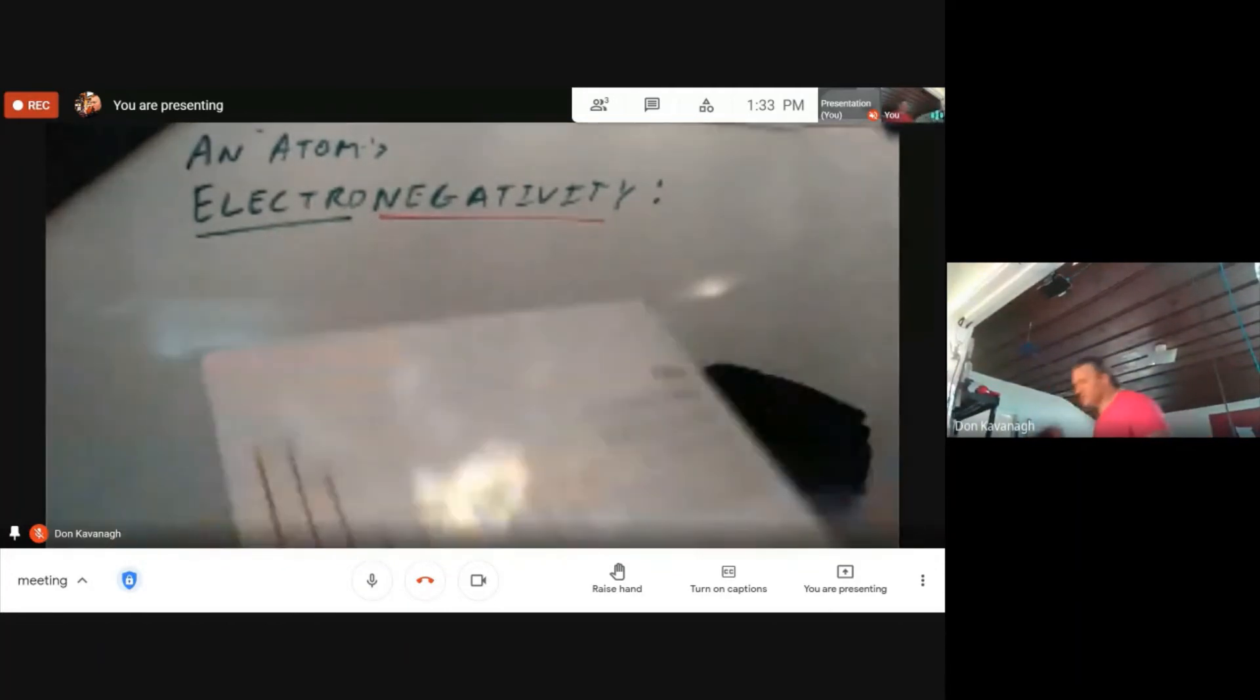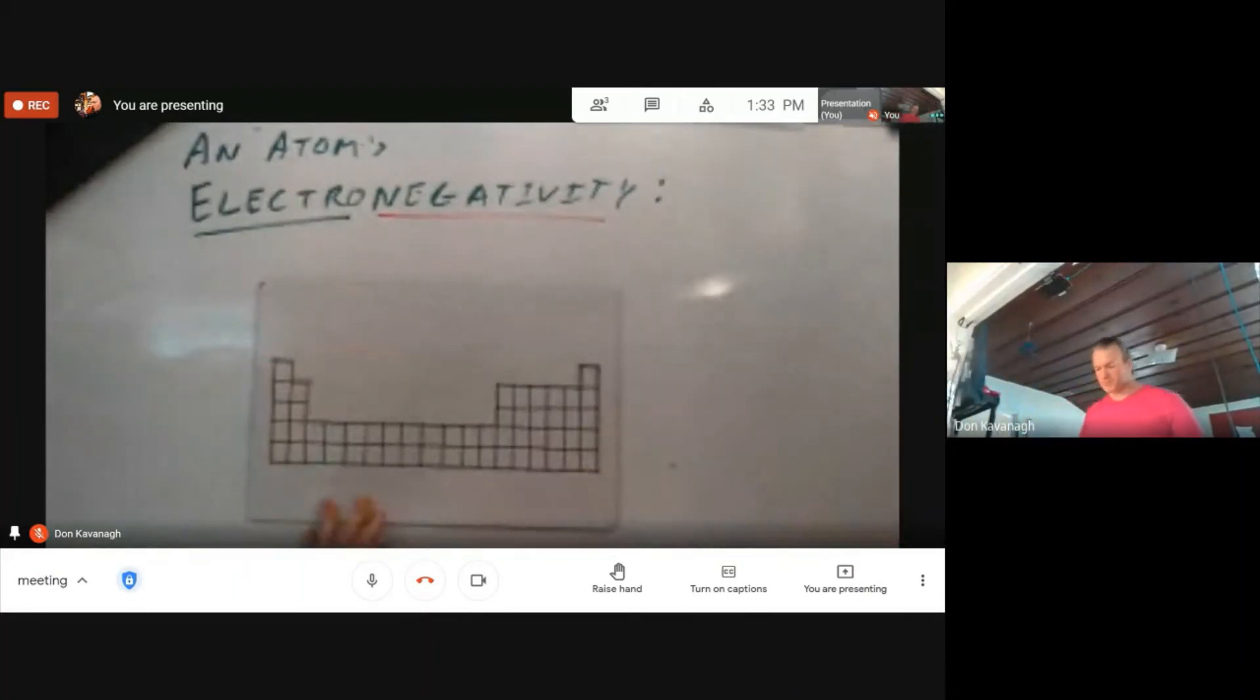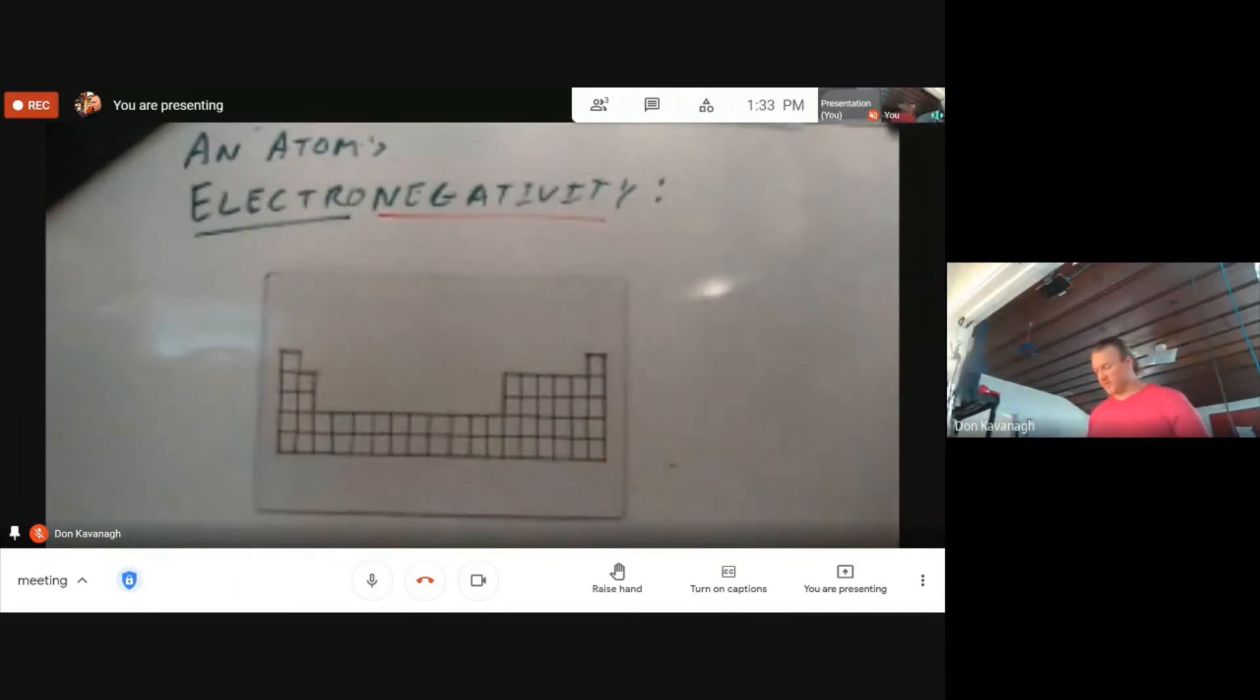We talked about trends of ionization and radius and things like that. The trend of electronegativity is as follows.